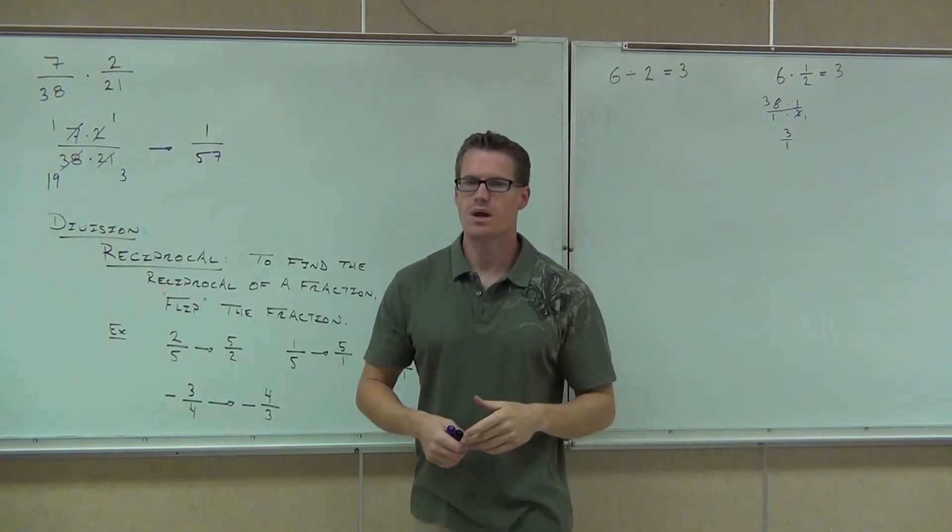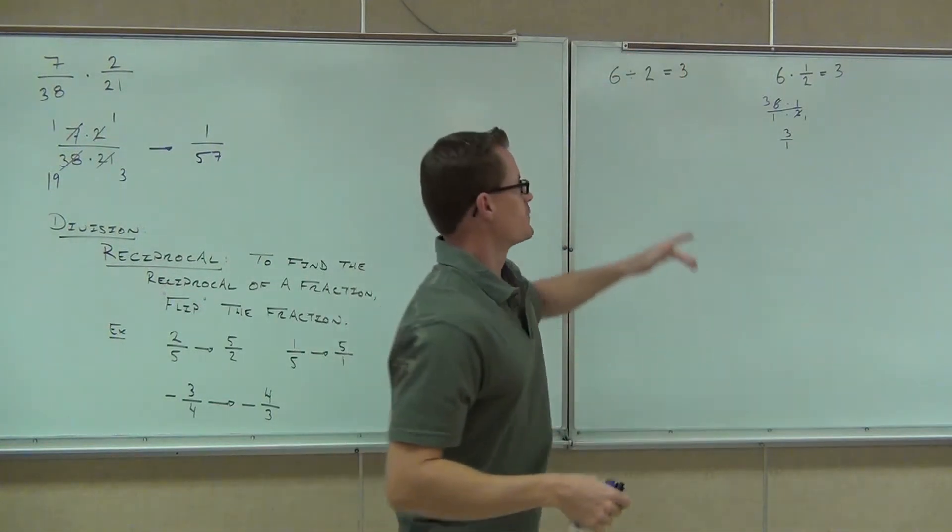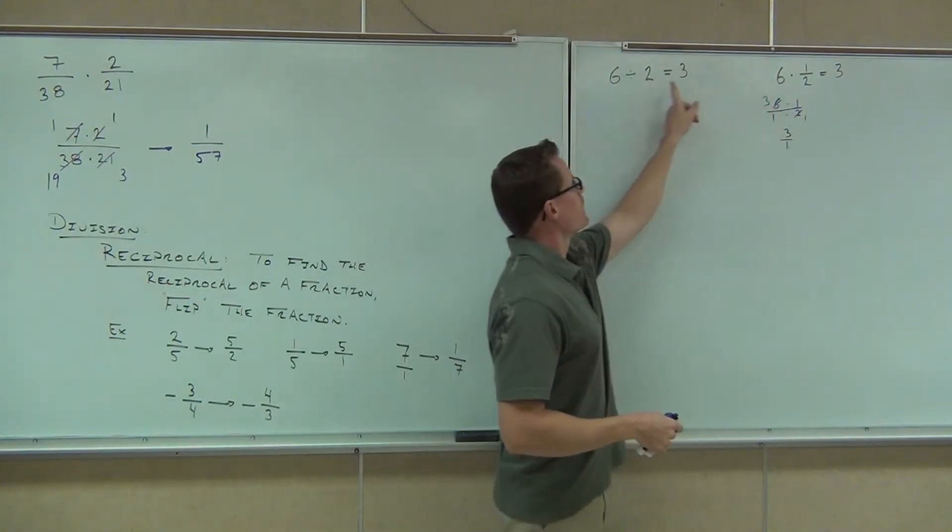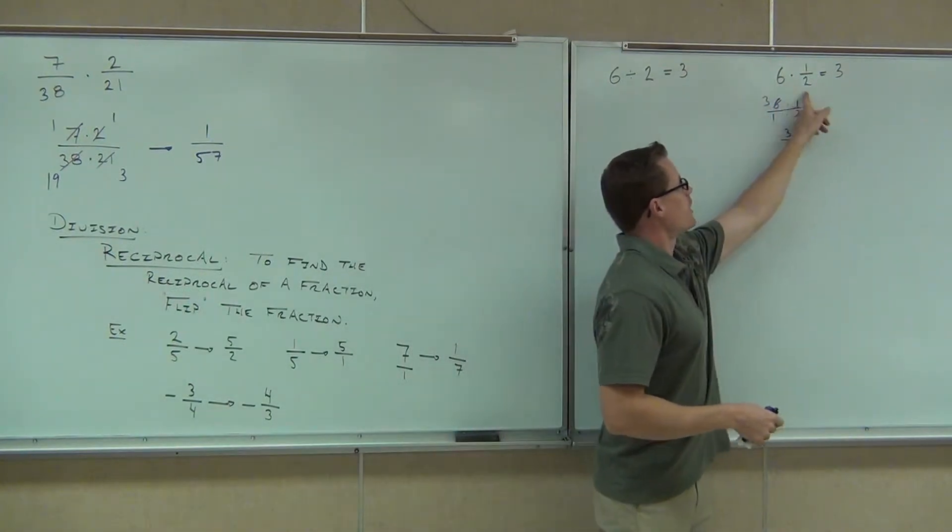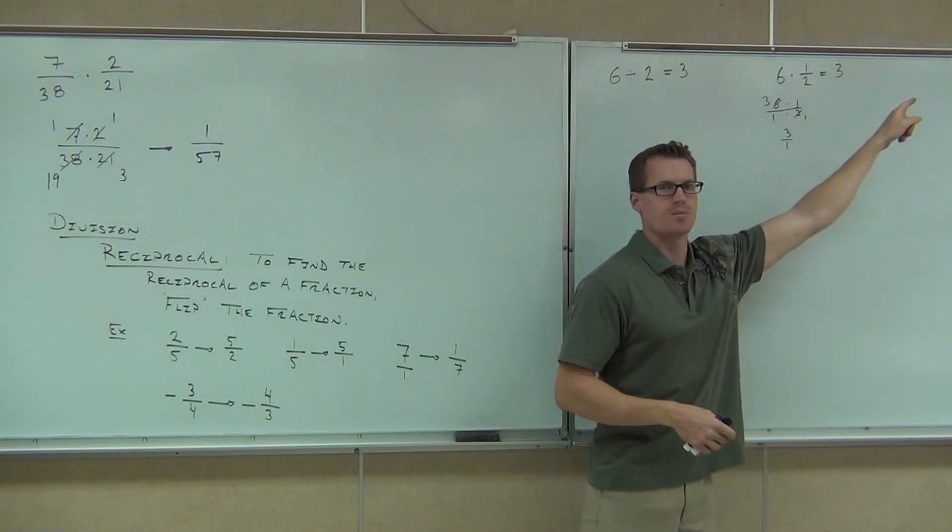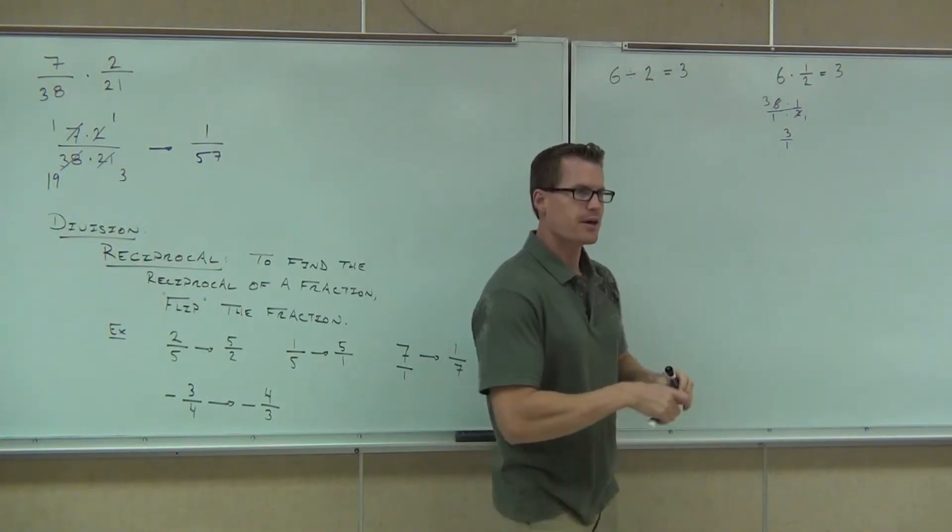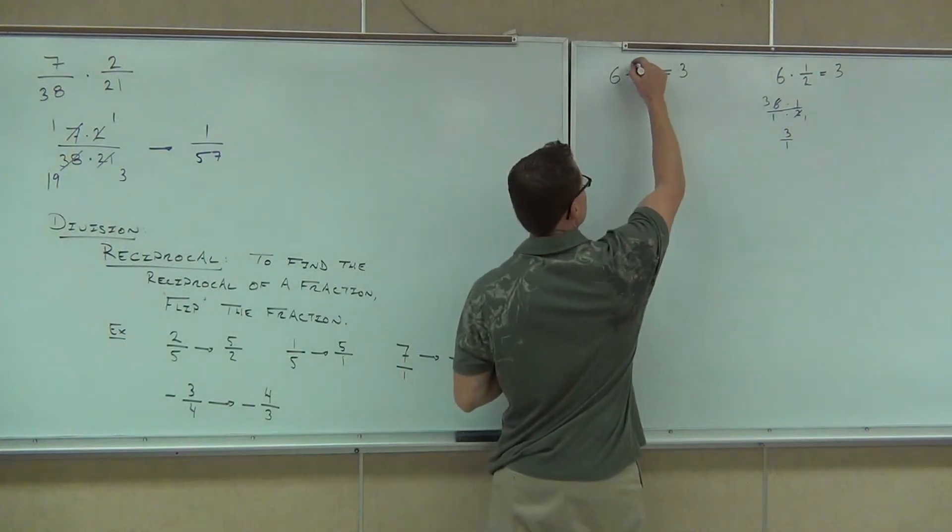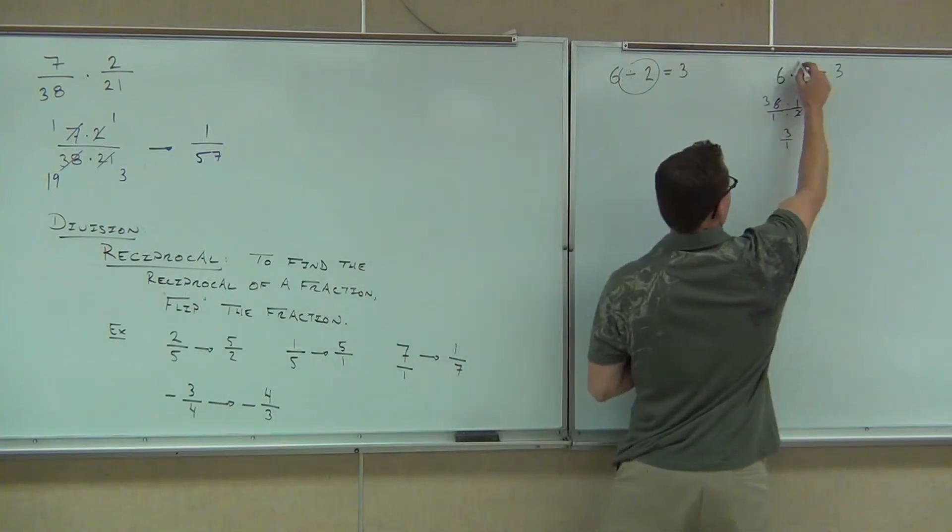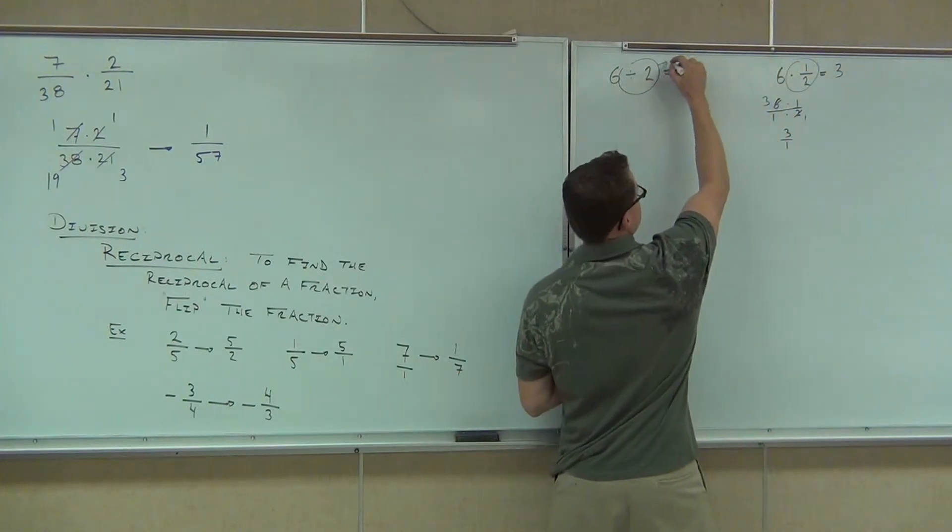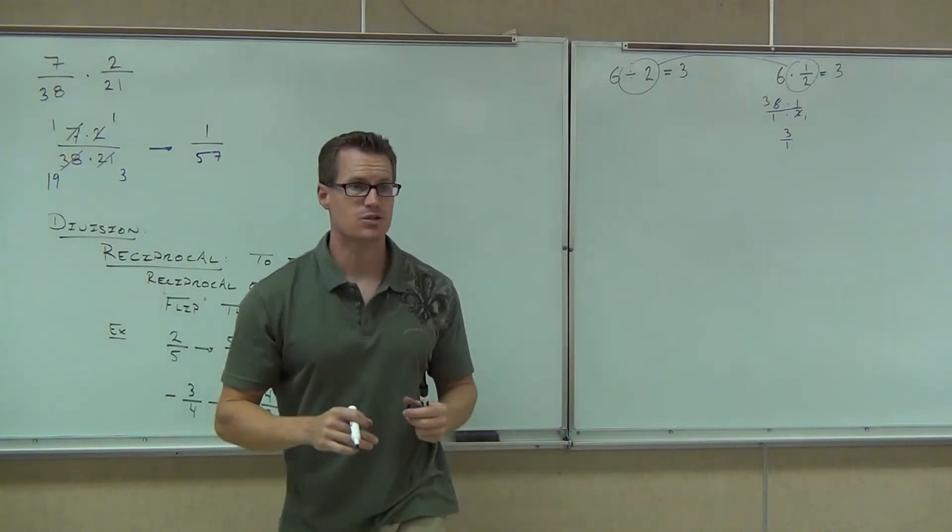What we know is that if we have 6, the same number here, and we do an operation here, and an operation here, and it gives us the same exact number, what this says to us in math is that this operation and this operation must be exactly the same, because it gave us the same exact answer.